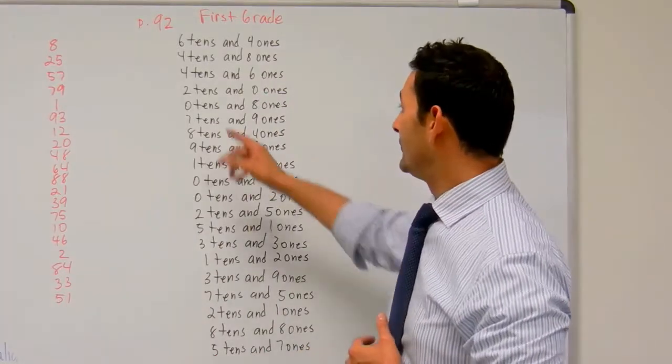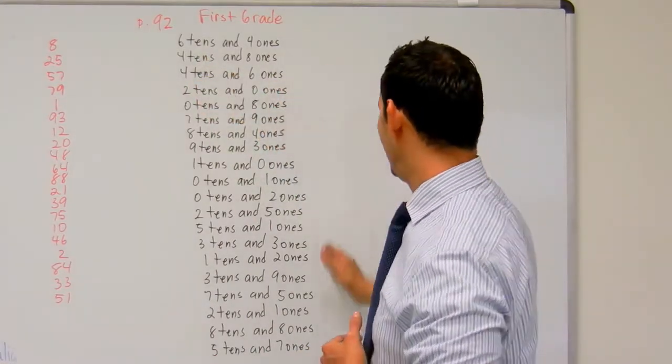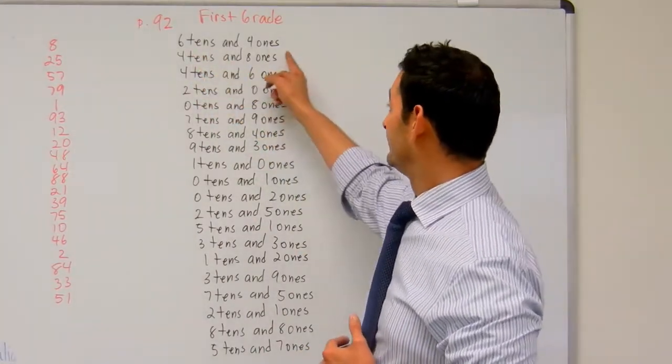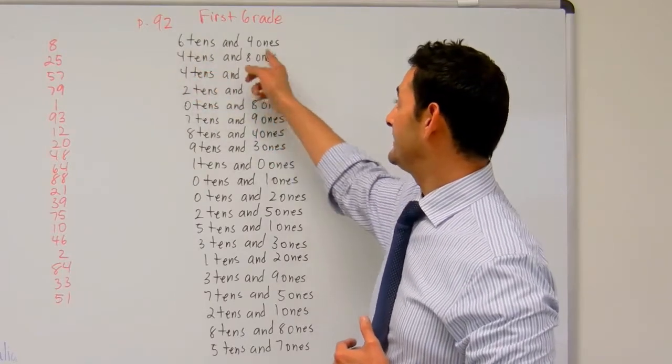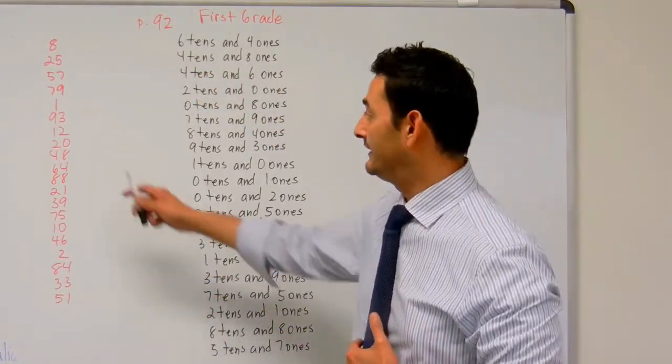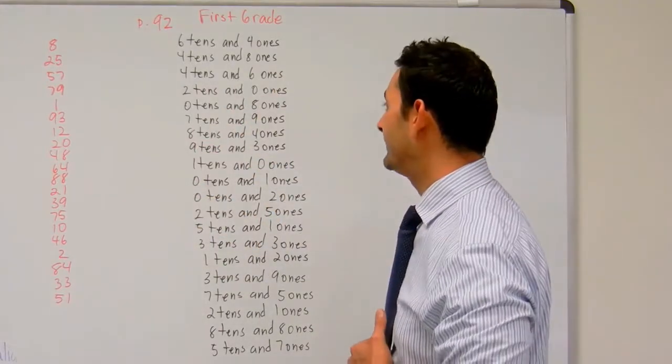On the right-hand column we have these written sentences here, six tens and four ones for example. What we're going to do is look at the left-hand column and match it to the right-hand column.